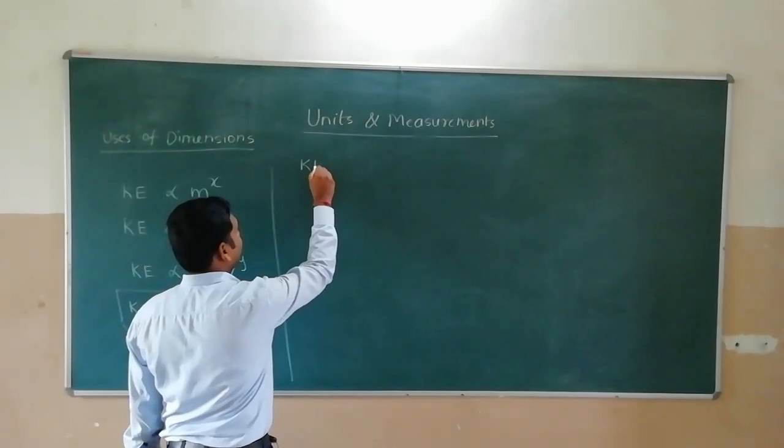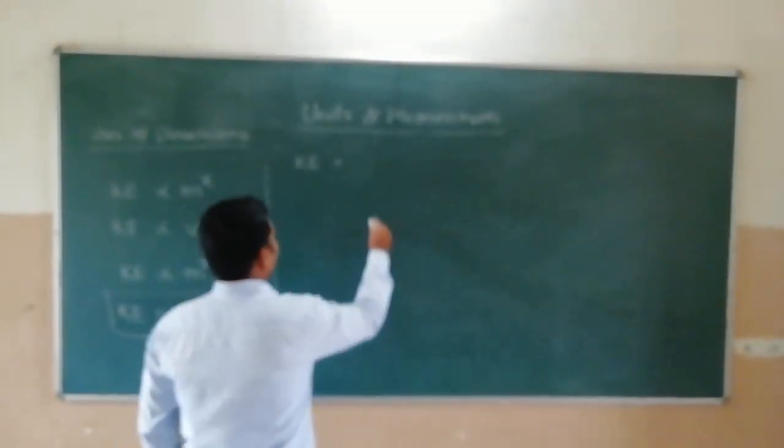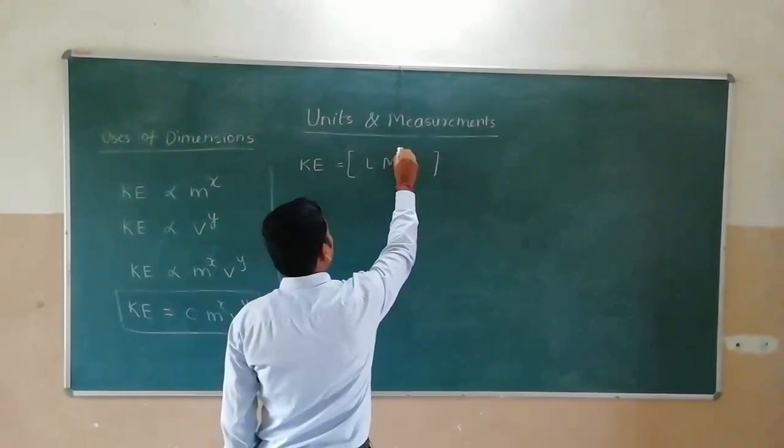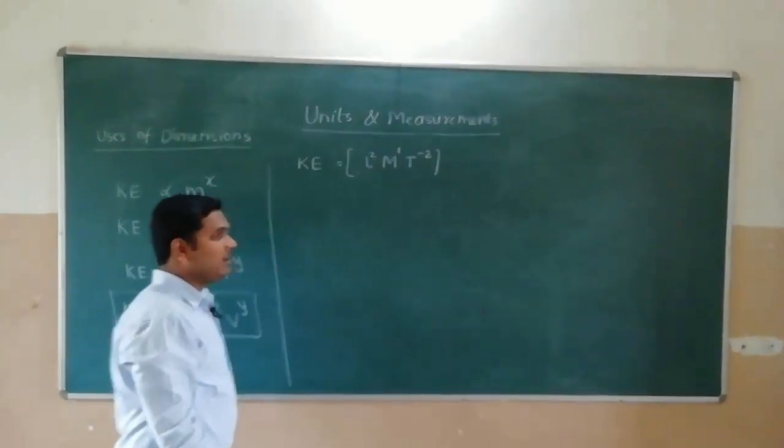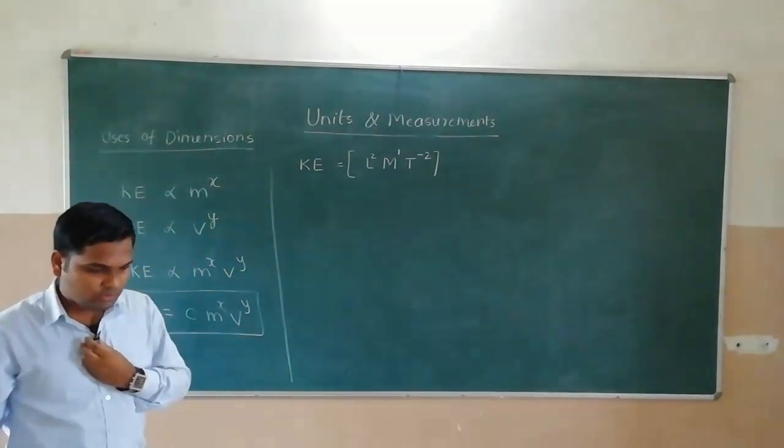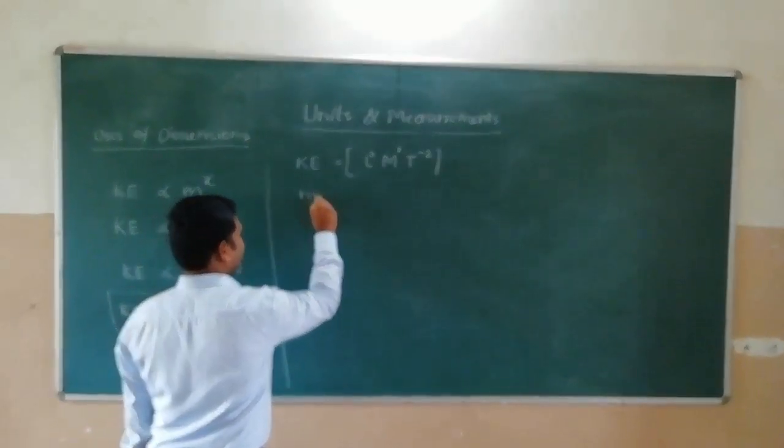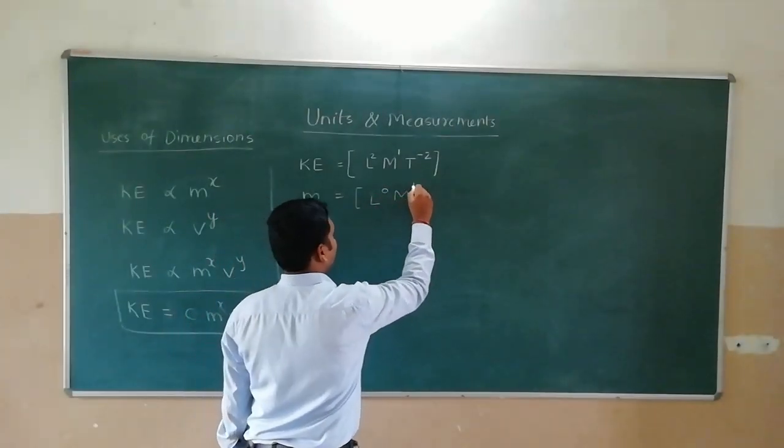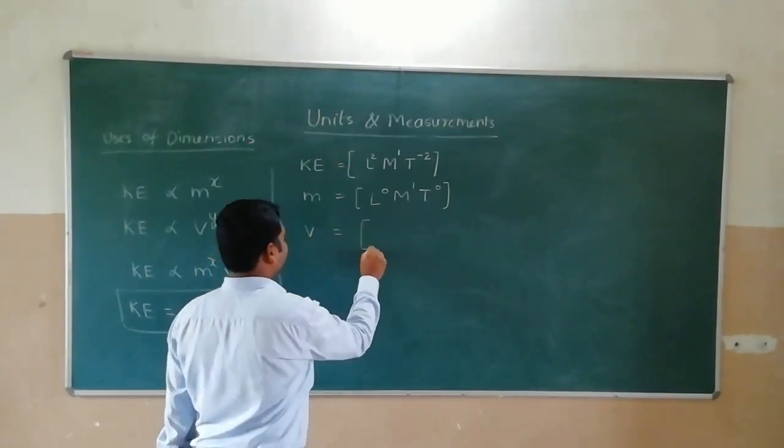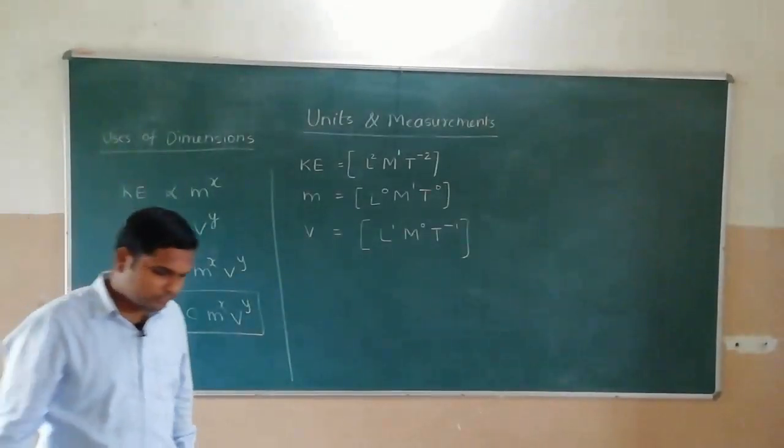Dimensions likhi lenge hain apan. Toh kinetic energy ka dimensions kya hota dekho? Wo jo apna dimensions ka jo lecture hai wo dekhna. Usmein kinetic energy ka apanhe dimensions find out kiya hai. So, udhar se mein directly dimensions likh dunga. Kinetic energy L2 M1 T minus 2. Ye apna dimensions hai kinetic energy ka. Mass ka likou dimension. Mass ka dimension kya hota hai? Length 0, mass 1 and time 0. Velocity. Meter per second matlab L1 mass 0 time minus 1.